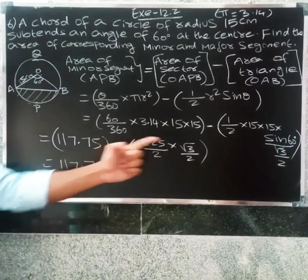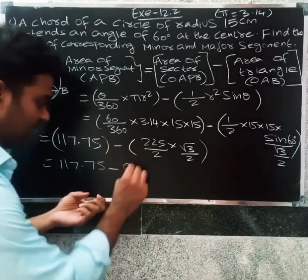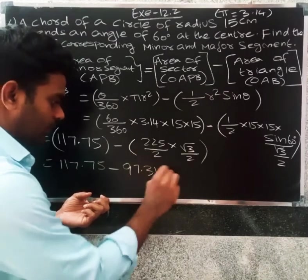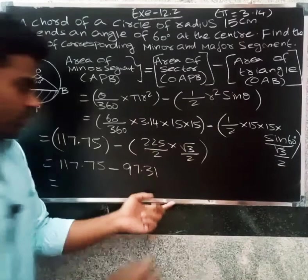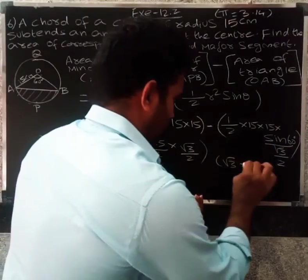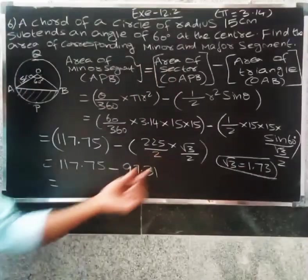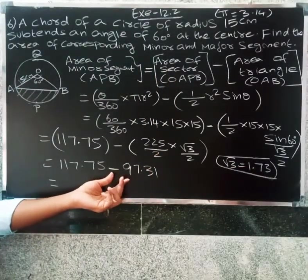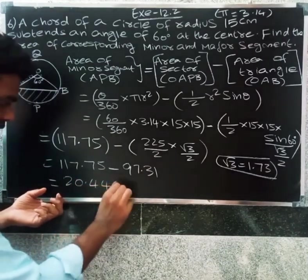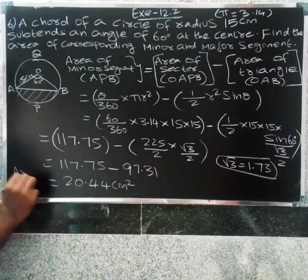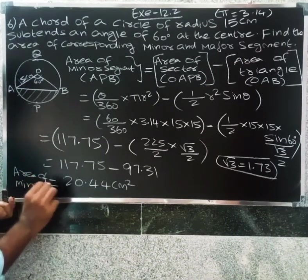So 117.75 minus 225 into root 3 by 4. 225 into root 3 divided by 4, putting the value, 97.31. Root 3 value from the question is 1.73. Simplifying, we get 20.44 centimeter squared. So area of minor segment is 20.44.